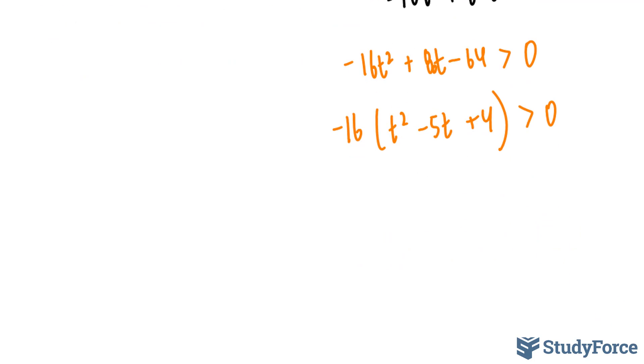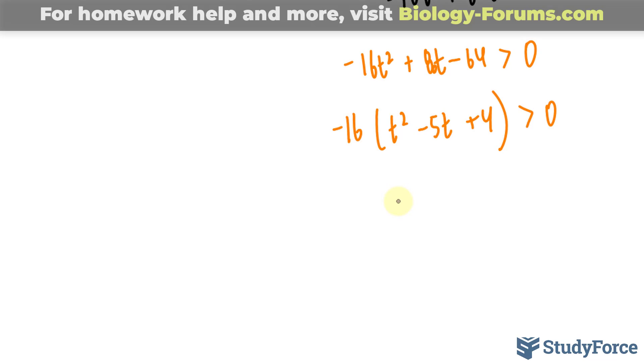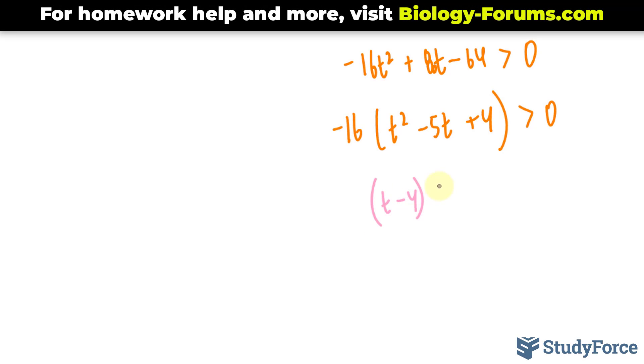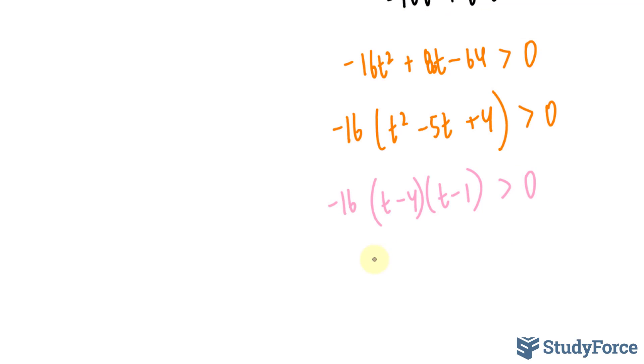I can now common factor this part. What two numbers multiply to 4 and add to negative 5? I'm thinking negative 4 and negative 1. Solving for t, I should end up with a t value of 4 and a t value of positive 1.